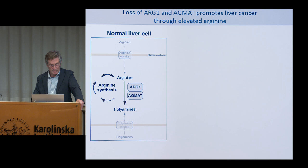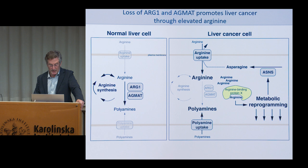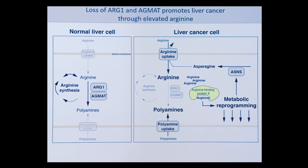This is a model summarizing what we think is happening. In a normal liver cell, high levels of enzymes of the urea cycle produce arginine, some of which is converted to polyamines. But in the tumor, this is all shut off — ARG1 and AgMet are turned off — and to compensate, the cells take up large amounts of arginine and polyamines from the environment. We think this high arginine is acting as a novel kind of second messenger in the cell to somehow reprogram metabolism at the transcriptional level. So we hypothesize there must be some arginine-binding protein — perhaps a transcription factor — which when bound to arginine can activate or inhibit genes leading to the metabolic reprogramming we observe. This would include the gene for asparagine synthetase, forming a positive feedback loop: more asparagine synthetase → more asparagine → more uptake of arginine → more metabolic reprogramming.